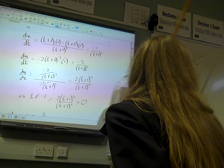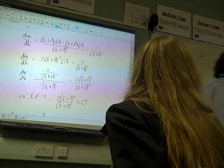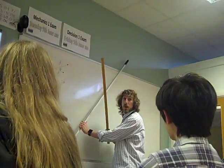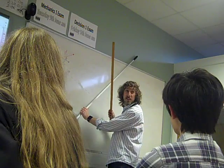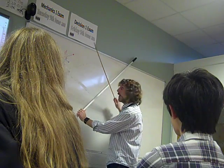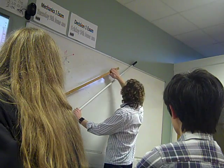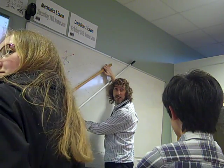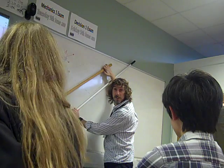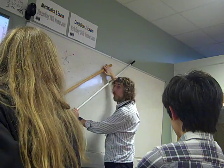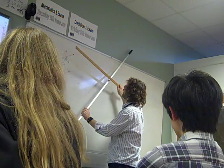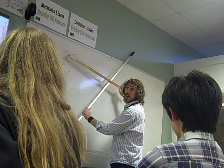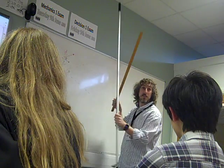In two dimensions, when you're on a whiteboard, there's only two things that can happen. Either the lines are parallel, or they intersect. That's it.